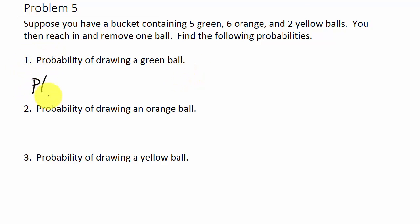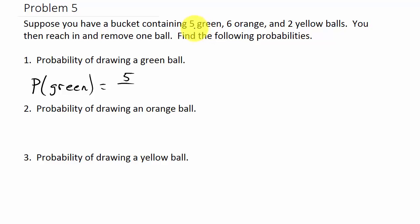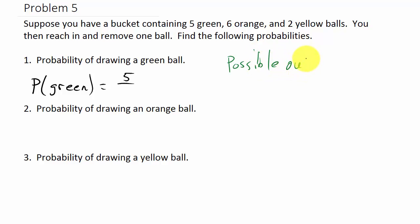The probability of a green ball being drawn: the number of successful outcomes is five (there are five green balls), and the total number of possible outcomes is five plus six plus two, which is thirteen. So the probability is 5/13.